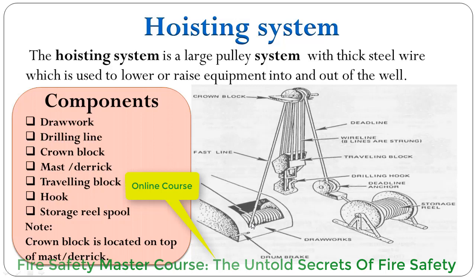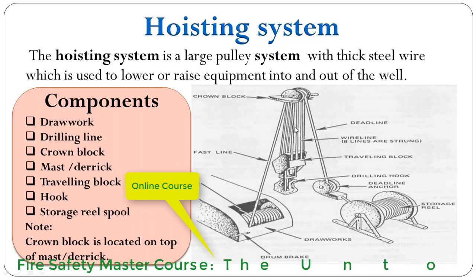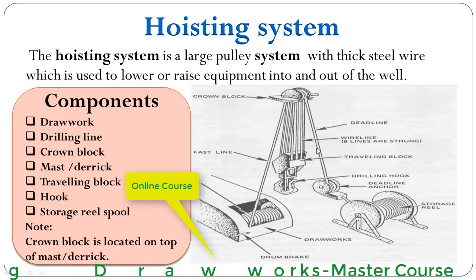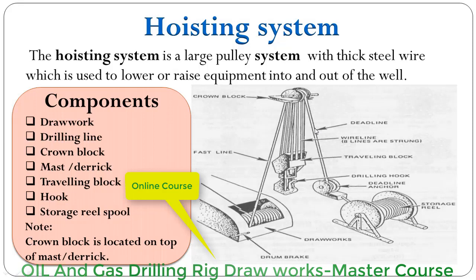The part of the line between the crown block and the drawworks is called the fast line, because this line moves at a faster speed compared to the rest of the drilling line. The part of the drilling line between the crown block and the deadline anchor is called the deadline, because this line remains stationary.